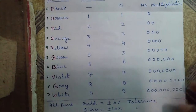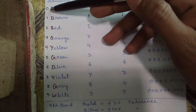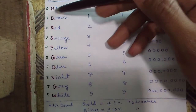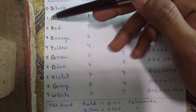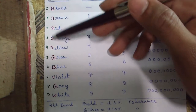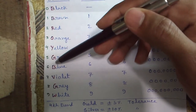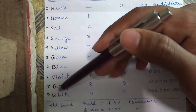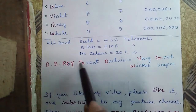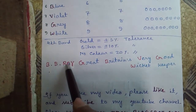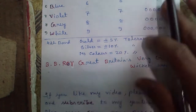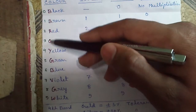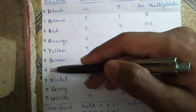Now how to remember the color coding chart? It's very easy. Remember the default values of each color and remember the first letters of each color: B, B, R, O, Y, G, B, V, G, and W. I remember them with this formula: BB Roy, Great Britain's Very Good Wicket Keeper.